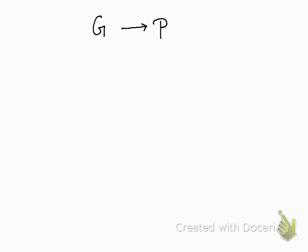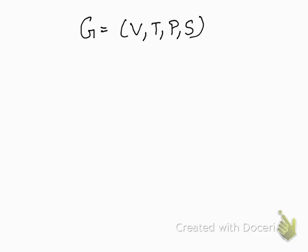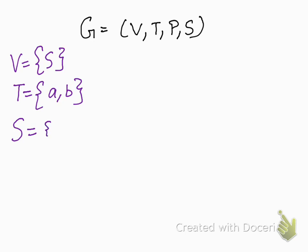Proving the first part is the easier one — given a context-free grammar we have to produce an equivalent PDA. Before proceeding with the proof, let us look at an example to get the intuition. Assume we are given a grammar G where the variables are {S}, terminals are {a, b}, the starting symbol is S, and the production rules are: S → aaSbb, or S → ε.